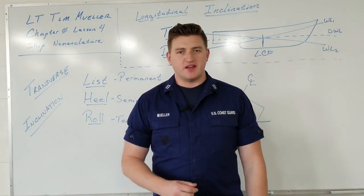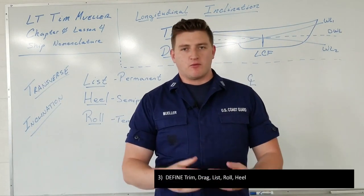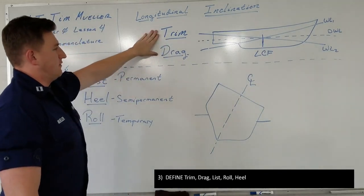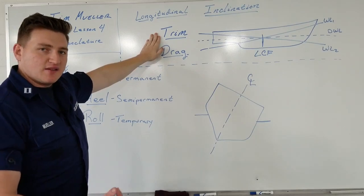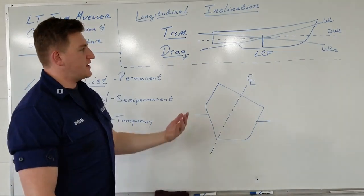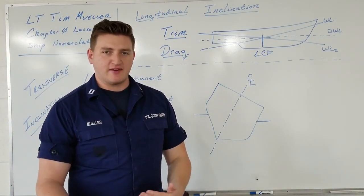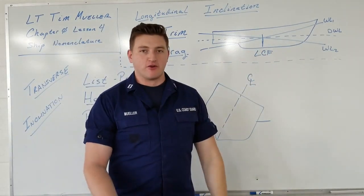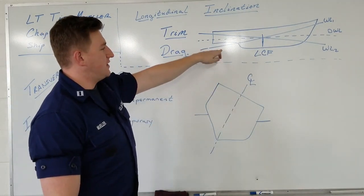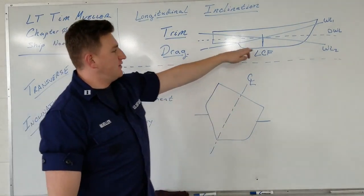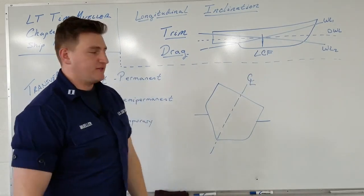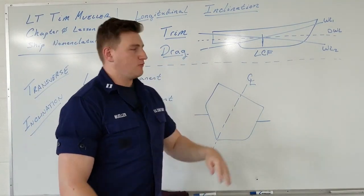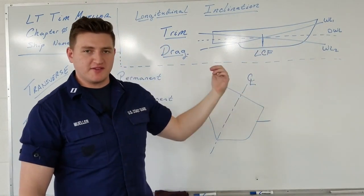Next we get into the basic terms of inclination, starting with longitudinal inclination. Looking at the side of the ship — stern on the left, bow to the right — we have two terms: trim and drag. Trim is an instantaneous change in drafts; drag is a designed condition. The ship will have different forward and aft drafts, and a mean draft is just the average of the two. One foot of trim by the bow means the bow is one foot deeper than the stern.